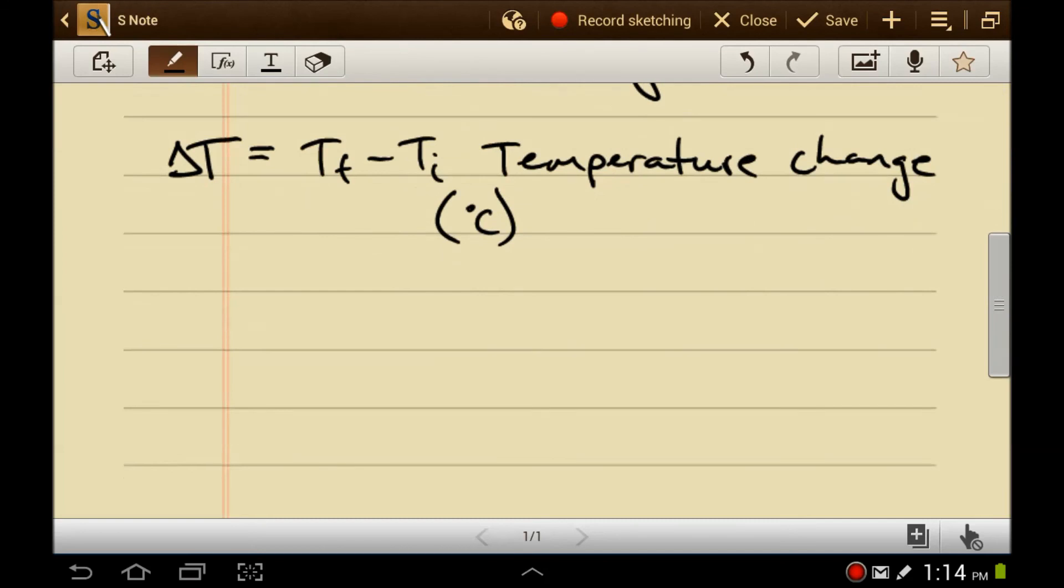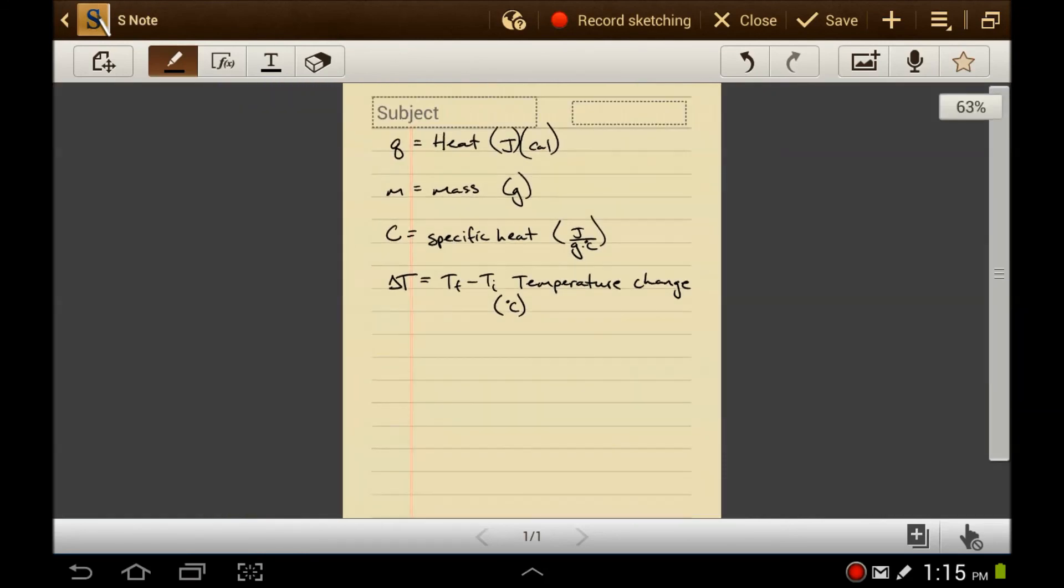The equation to relate all of these variables is Q equals mC delta T. The heat equals the mass times the specific heat capacity times the change in temperature.